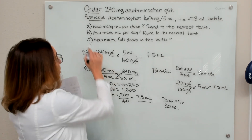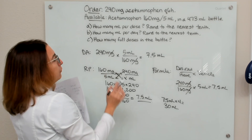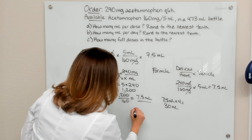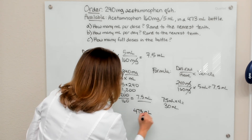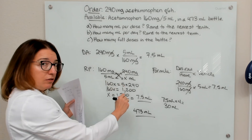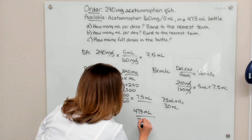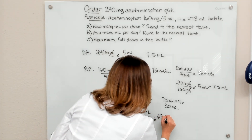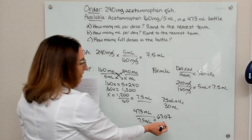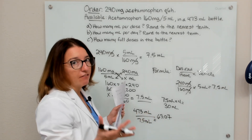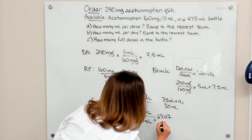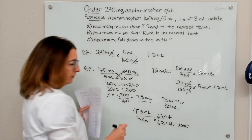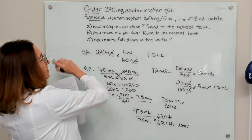Part C asks how many full doses are in the bottle. Our bottle has 473 milliliters, and each dose is 7.5 milliliters. Dividing gives 63.07. We can't give 0.07 of a dose — that's not a full dose — so we only have 63 full doses in our bottle. That's the answer to part C.